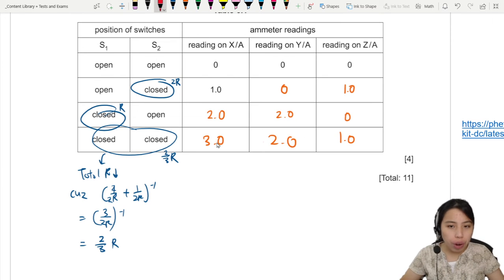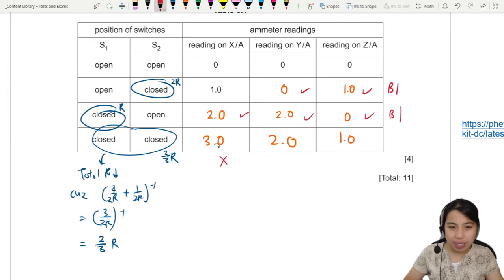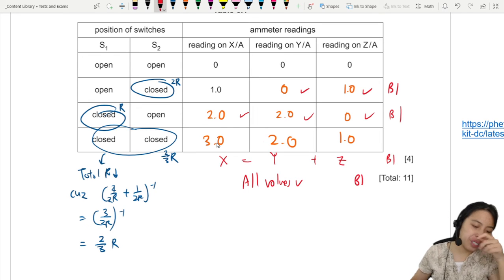So how do you get these marks? The first one is this row both correct. Next one. All 3 correct for the next row. Next one. This X value is Y plus Z. That's one mark. And if all values correct for the last row, then that's the final B1 mark. This is tricky.